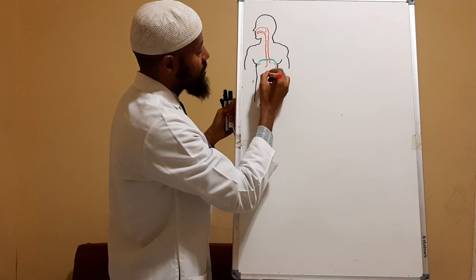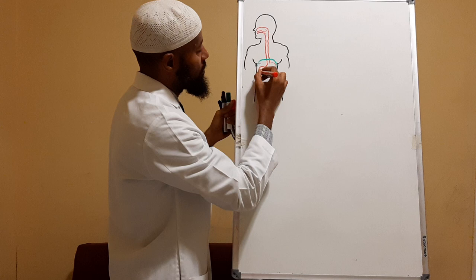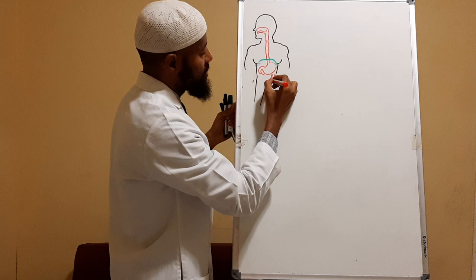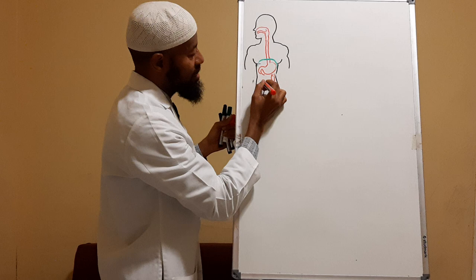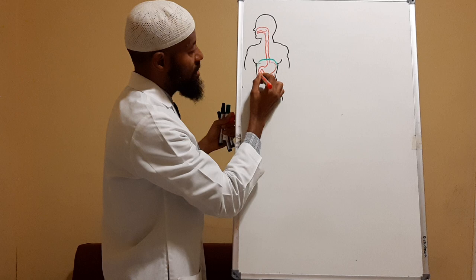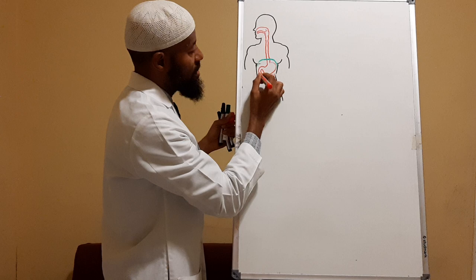Then you have the stomach — the greater curvature, the lesser curvature, and the duodenum. In this whole area you have the descending colon, the sigmoid colon, and the anal canal to the anus. On the right side is the appendix and the ascending colon. So let's take a cross-section of any part of this.